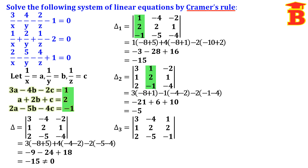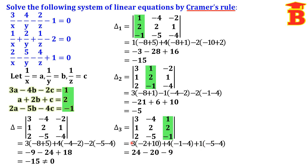Del 3: replace the third column by constants 1, 2, minus 1, keeping first column 3, 1, 2 and second column minus 4, 2, minus 5. Expanding: 3 into 8 is 24; plus 4 into minus 5 is minus 20; plus 1 into minus 9 is minus 9. Adding gives del 3 equals minus 5.